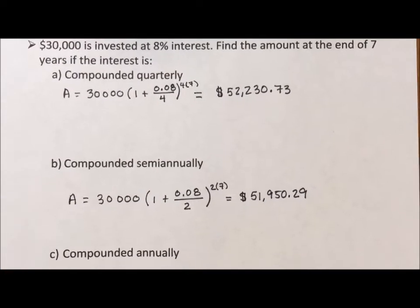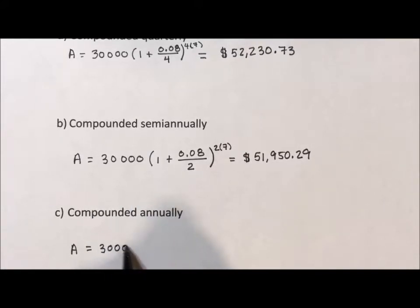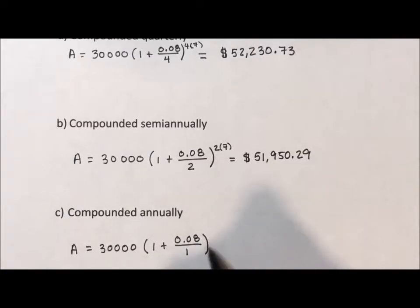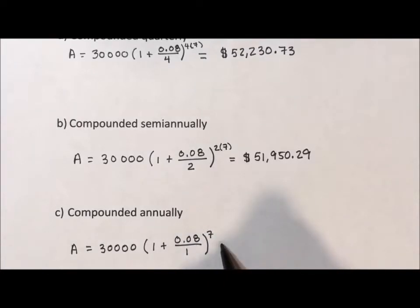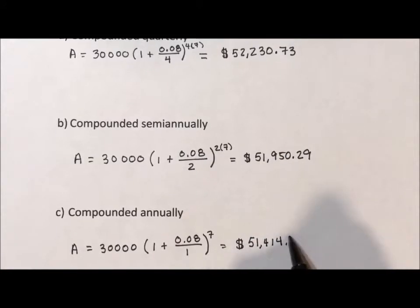Now, compounded annually: we start with our $30,000 again. It's 1 plus 0.08, and we don't have to write divided by 1 because anything divided by 1 is just itself, but you can include it to keep the pattern consistent. The exponent is 1 times 7, or just 7, because it happens 7 times — 7 years, annually, once a year. In this case we get $51,414.73.